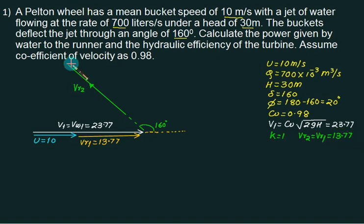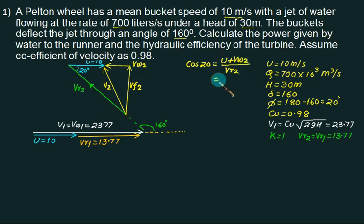From the tip of this we will construct the U velocity, that is 10 meters per second. This angle will be equal to 20 degrees. If you join this point with the tip of the U you will get V2. This one is Vf2 and this one is Vw2. So we can take cosine of 20 degrees, which is basically the adjacent side, which is U plus Vw2, and hypotenuse is Vr2. Put U equals 10, Vw2 unknown, Vr2 is 13.77.